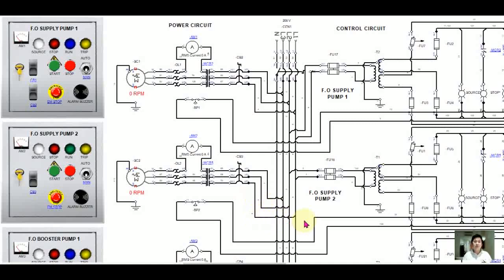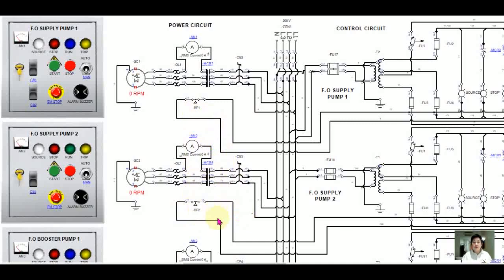Now you have the power circuit for fuel oil supply pump number one and number two. The panel board will be covered in a separate tutorial — you can find it on YouTube. Here we also have a pressure switch: pressure switch number one and pressure switch number four, which are connected to the control circuit. So this completes the power circuit, and next we will proceed to the control circuit.